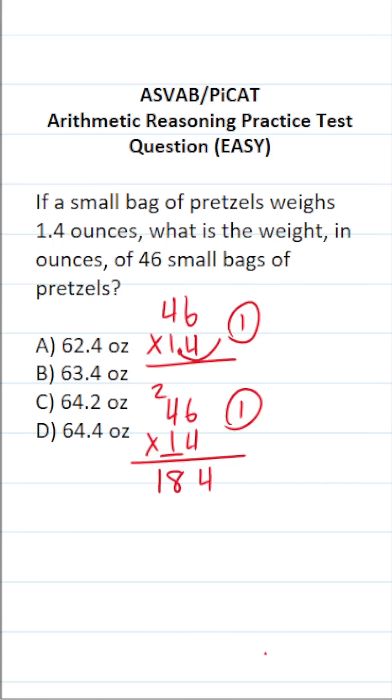Before we start multiplication with this one, we have to add a 0 placeholder. 1 times 6 is 6. 1 times 4 is 4.